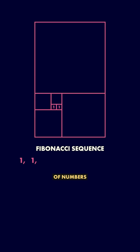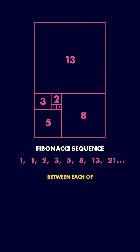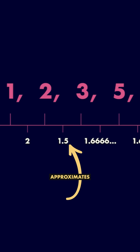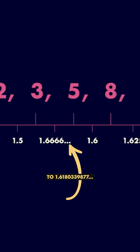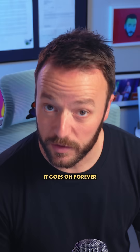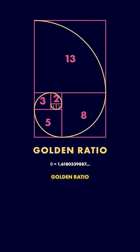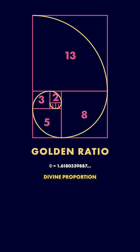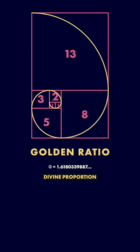This string of numbers is called the Fibonacci sequence. And if we look at the ratio between each of these numbers, the higher we get, the closer that ratio approximates to 1.6180339877. It goes on forever. This is the golden ratio, or the divine proportion.